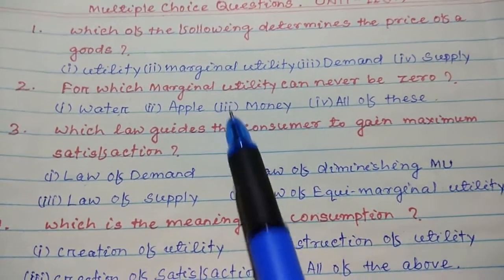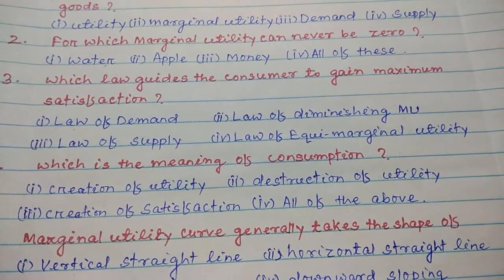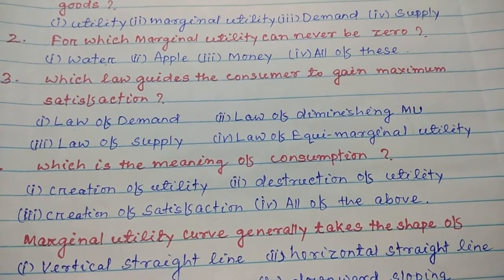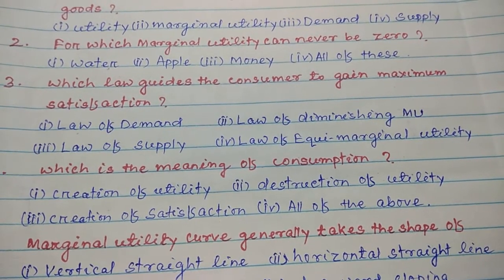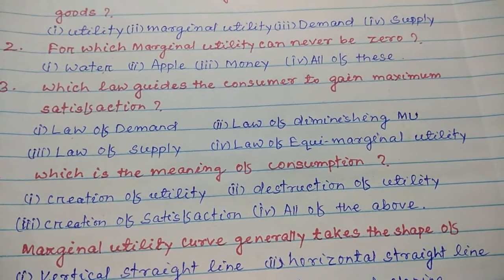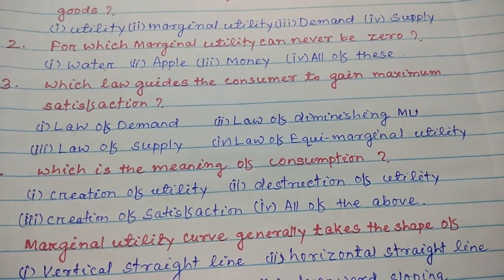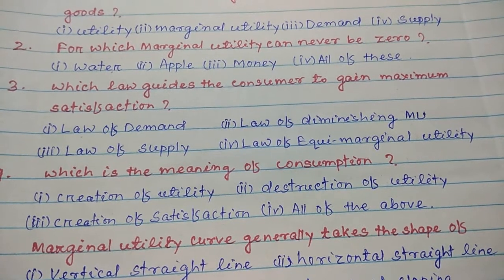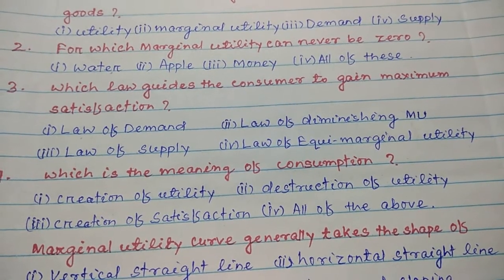Number three: Which law guides the consumer to gain maximum satisfaction? I. Law of demand, II. Law of diminishing marginal utility, III. Law of supply, IV. Law of equi-marginal utility. The law of equi-marginal utility guides the consumer to gain maximum satisfaction — Professor Marshall called it the law of maximum satisfaction. So the answer for number three is IV. Law of equi-marginal utility.